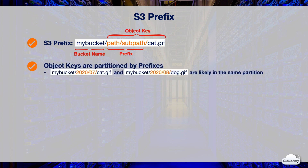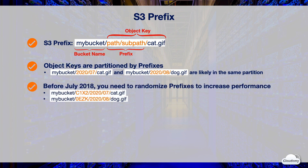Object keys are partitioned by prefixes. In the example, we have 2020/7/cat.gif and 2020/8/dog.gif objects in the same bucket. Because their prefixes begin with 2020, these objects are likely partitioned together. Previously, this could result in significant performance impact, because read and write requests for these objects can go to the same partition. Before July 2018, you needed to randomize prefixes to increase S3 performance, such as adding a random string or a short hash before the prefix, which increased the complexity of your application logic.